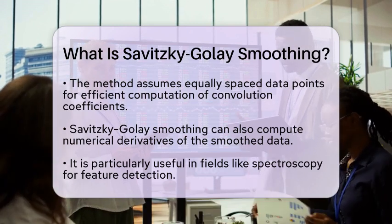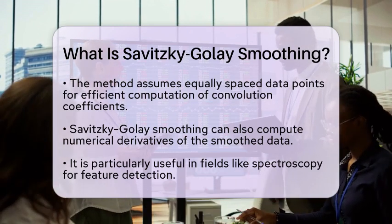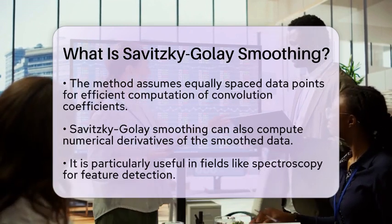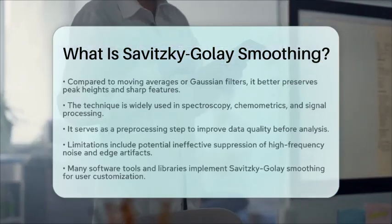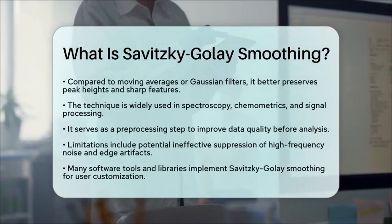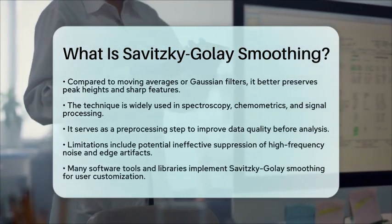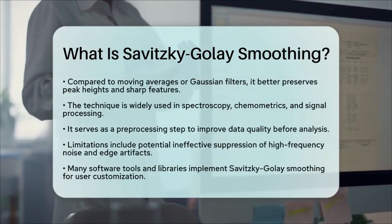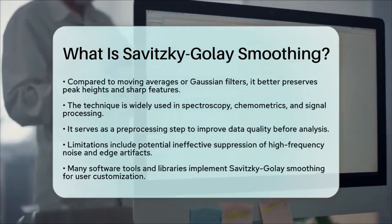Savitzky-Golay smoothing is widely used in various fields, including spectroscopy, chemometrics, and signal processing. It serves as a preprocessing step to clean data before further analysis.